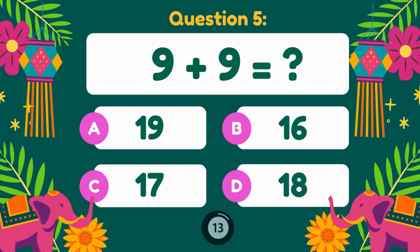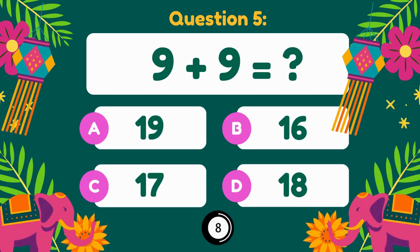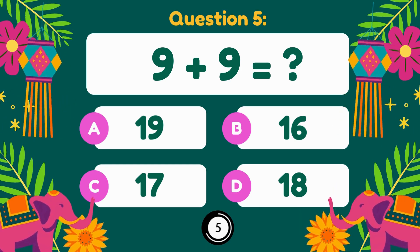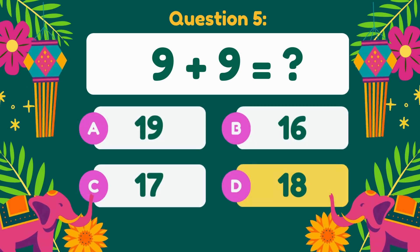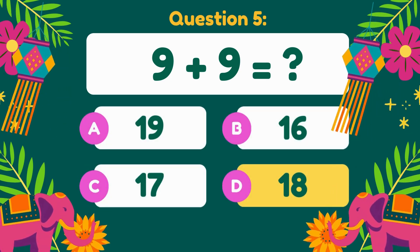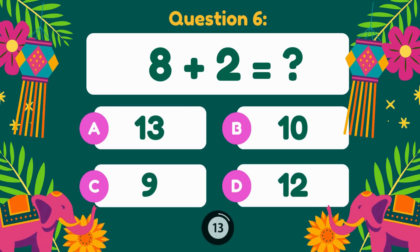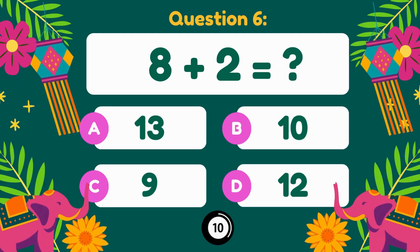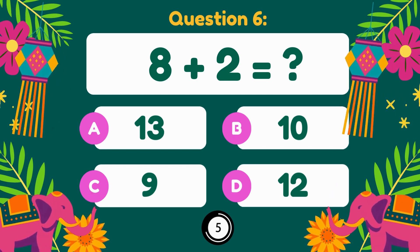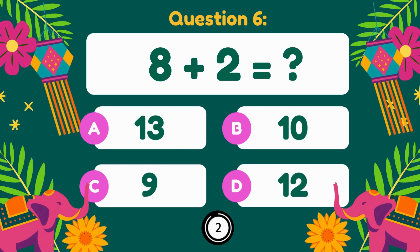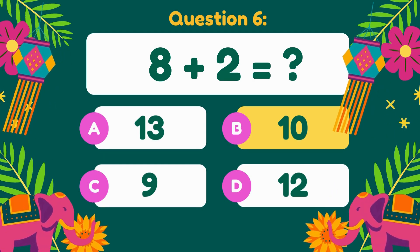9 plus 9 equals. 9 plus 9 is equal to 18. 8 plus 2 equals. 8 plus 2 is equal to 10.